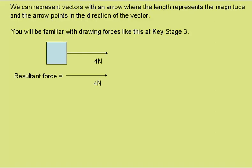The resultant force in this case is just the 4 newtons to the right. Here we have a box where there is 4 newtons to the right and 2 newtons to the left. So this arrow here will be twice the length of this arrow here, as it represents twice the force. The resultant force here is 2 newtons to the right.